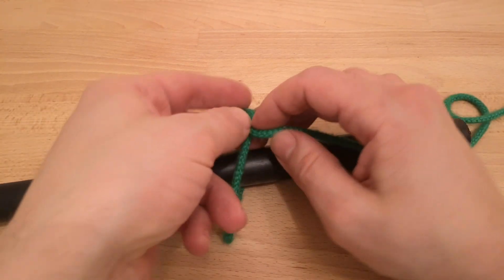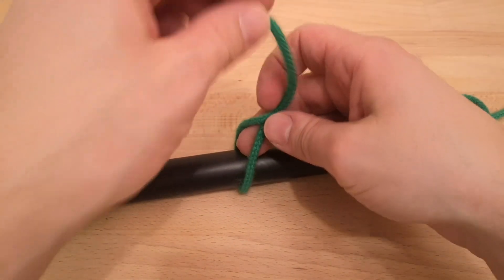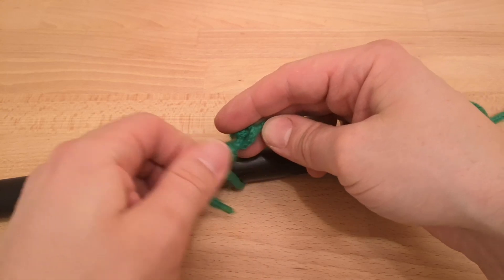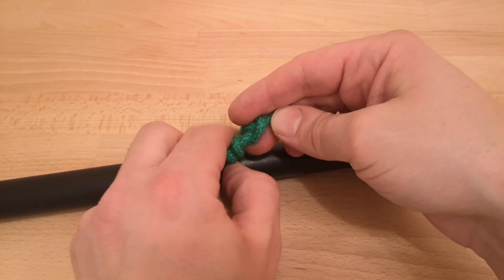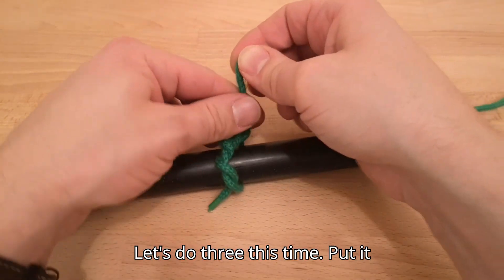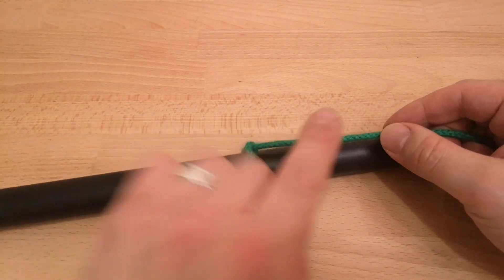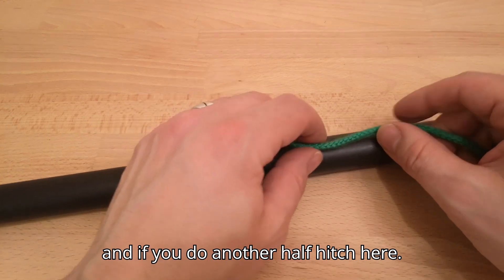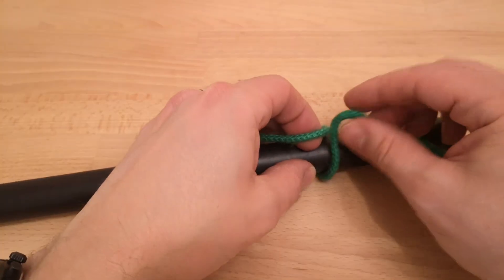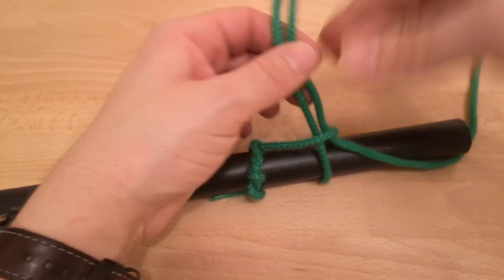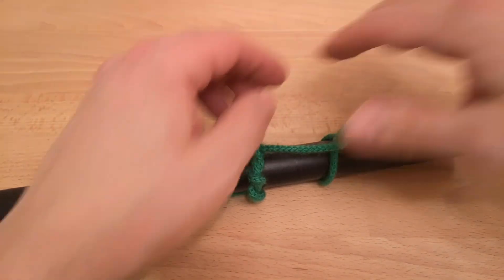Over, around here, and then wrap it around itself. Let's do three this time. Pull it tight. So there's your timber hitch. And if you do another half hitch here, it will make it a killick hitch. There we go.